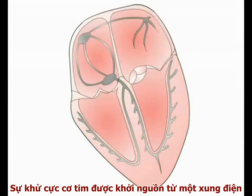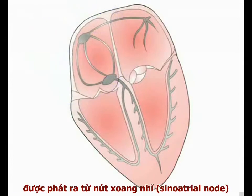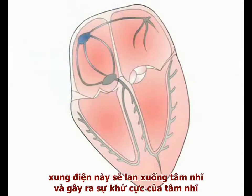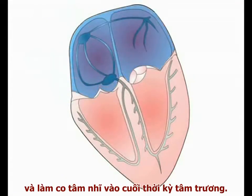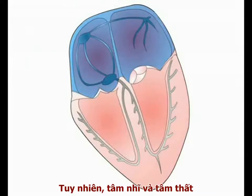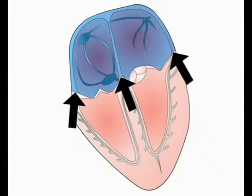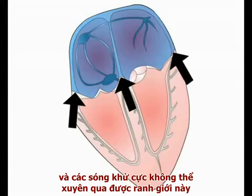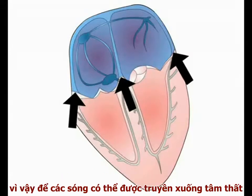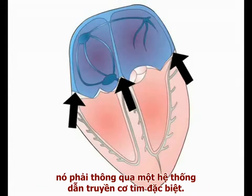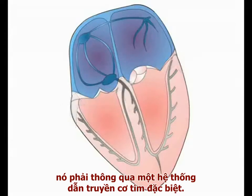Cardiac depolarisation is triggered by an electrical pulse generated in the sinoatrial node. This electrical pulse then spreads through the atria, triggering their contraction late in diastole. The atria and ventricles, however, are separated by a non-conducting fibrous septum. The depolarisation wave cannot penetrate this barrier, and in order to activate ventricular contraction, the wave must be transmitted into the ventricles by the specialised cardiac conducting system.